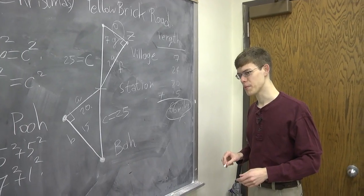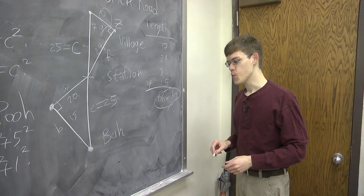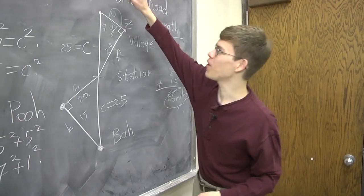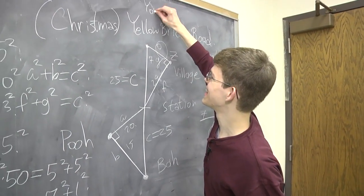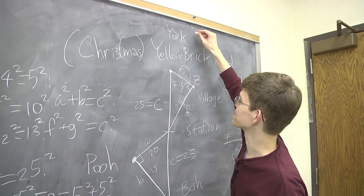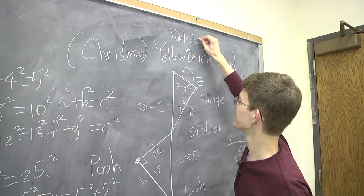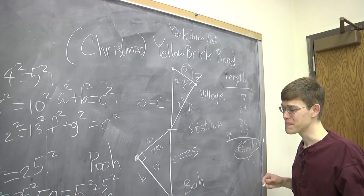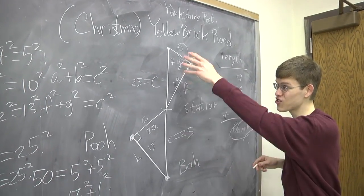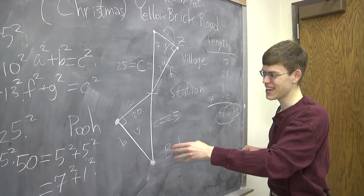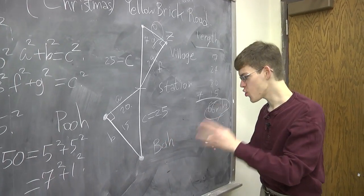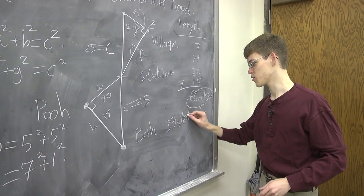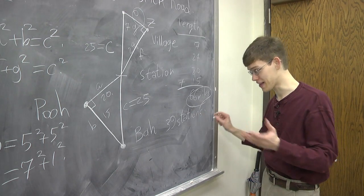Now that solves that simple problem. But what I didn't tell you is that actually the Yorkshire Post didn't quite give this problem. In their problem, it's not just these two lengths that have to be equal. There are thirty-nine stations in the Yorkshire Post problem. Otherwise, it's exactly the same.